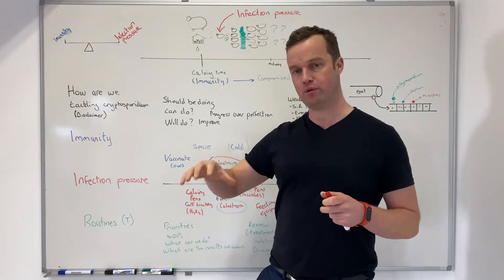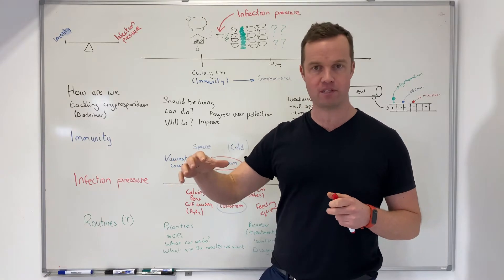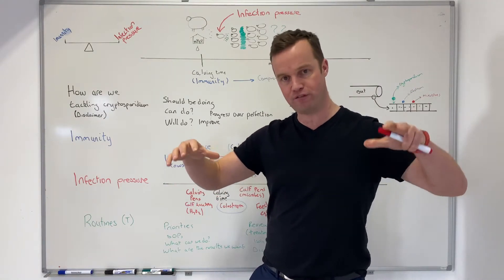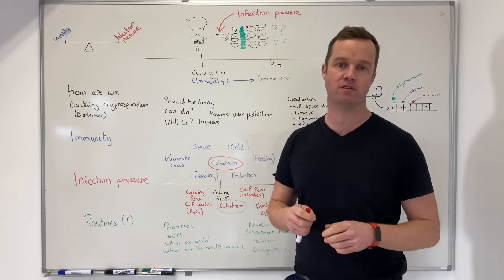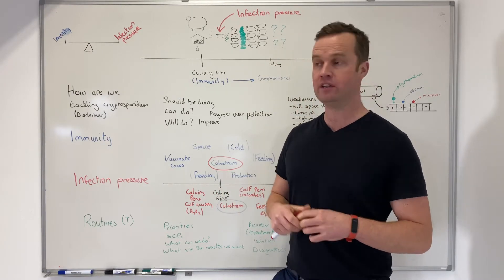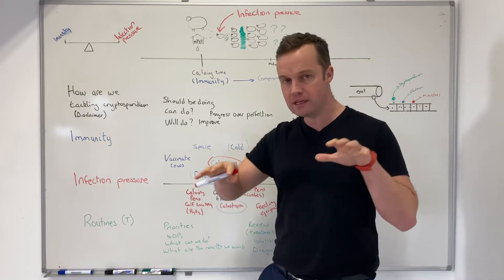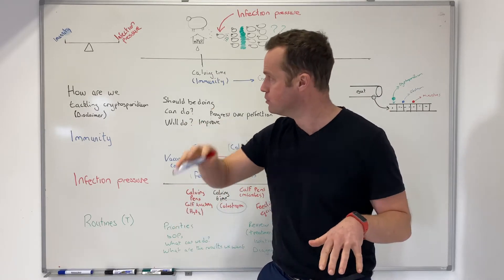When we're talking about any infectious disease in calves, we're always trying to balance two things: immunity on one side - we're trying to boost or maximize immunity - and we're going to try and bring down infection pressure on the other side. Infection pressure is the amount of bugs or pathogens that an animal is exposed to. Balancing immunity and infection pressure.